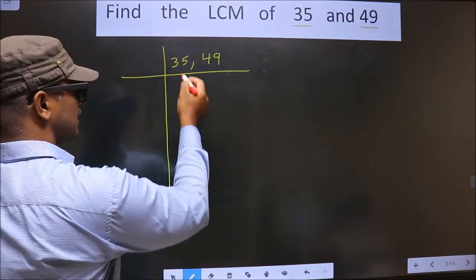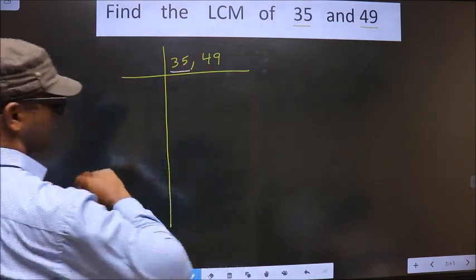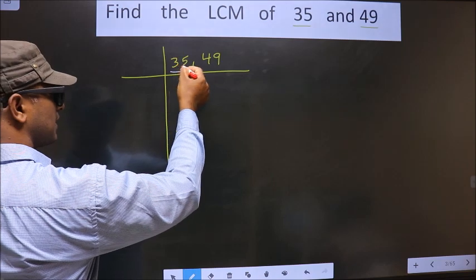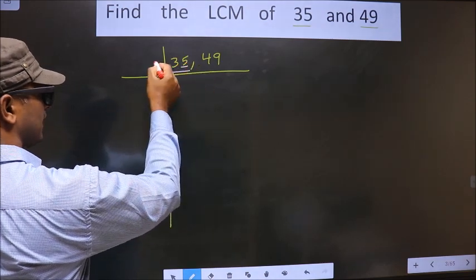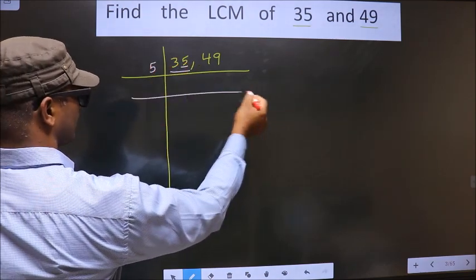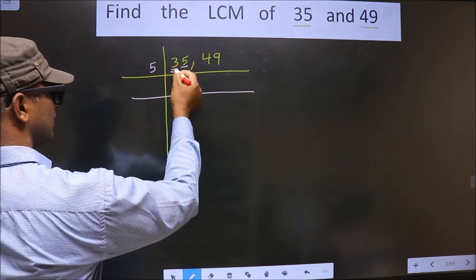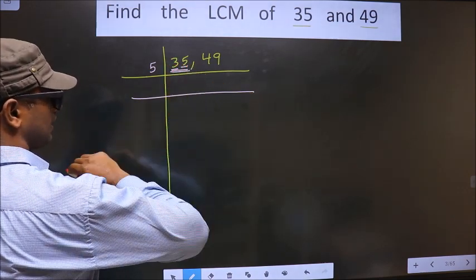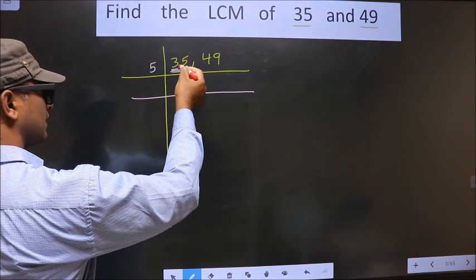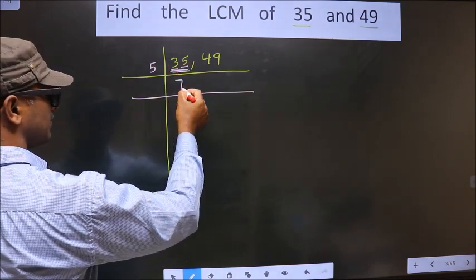First, we focus on the first number, that is 35. Now, for this number, the last digit is 5, so we take 5 here. The first number is 3, which is smaller than 5, so we take two digits, that is 35. When do we get 35 in the 5 table? 5 times 7 is 35.